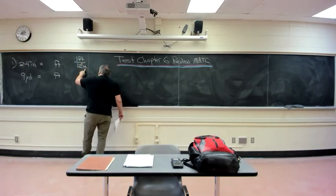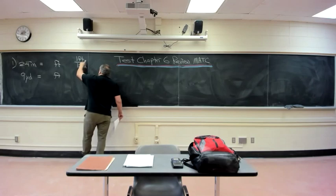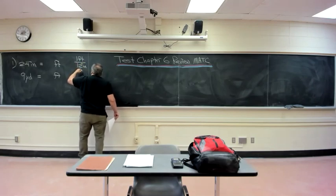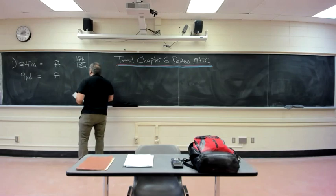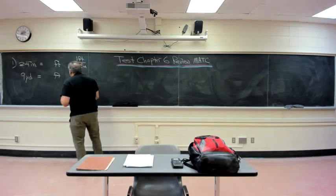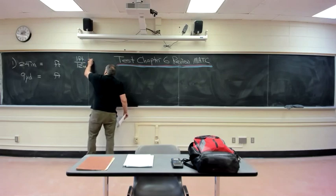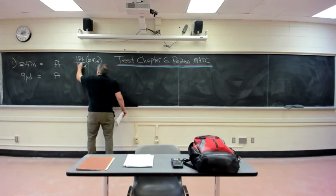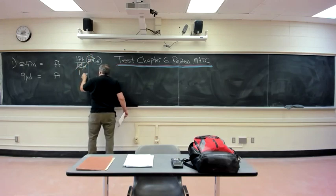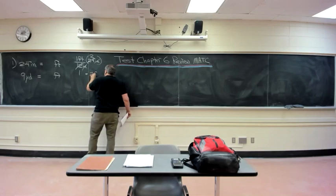So if you want feet from inches, you write it like this: one foot for every 12 inches, multiplied by 24 inches. The inches cancel, and the 12 and the 24 cancel. You've got 2 times 1 is 2 feet.